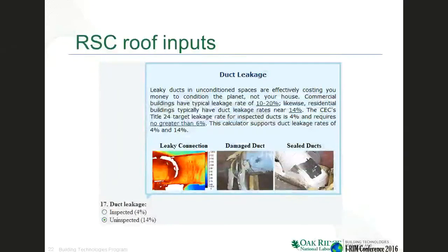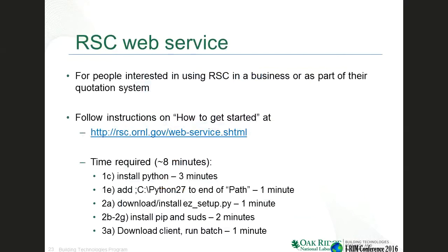An interesting thing too is that ducts are leaky. The average uninspected duct is 14% leaky and an inspected duct is 4% leaky. Most people haven't inspected or sealed their ducts. We saw earlier that 54% of energy goes to heating and cooling a home, and if it's 14% leaky, that means about 7% of your utility bill is going to heat and cool the outdoors, not your home. So duct leakage is a major parameter that affects energy usage. If you want to make your home more energy efficient, sealing your ducts is usually one of the top recommendations.